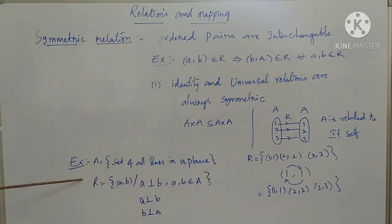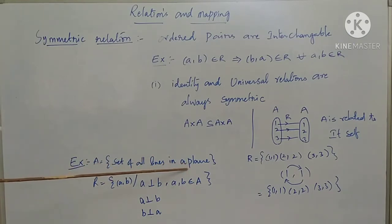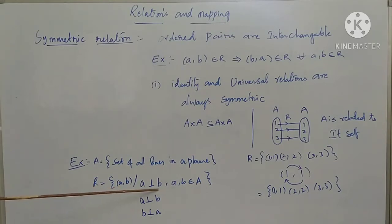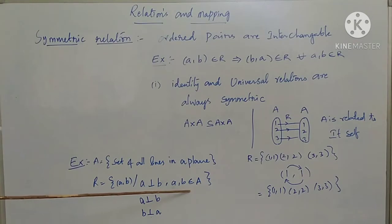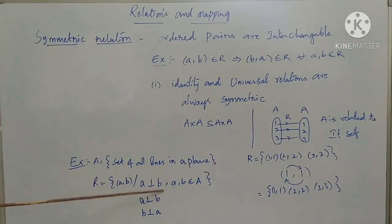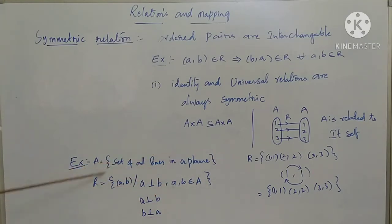Here is one example: let A be the set of all lines in a plane, and define a relation where A is perpendicular to B. When A is perpendicular to B, B is also perpendicular to A. This type of relation is called a symmetric relation.